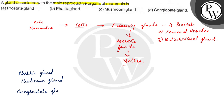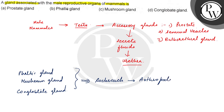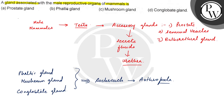These three types of glands are not seen in mammals; we get to see them in cockroach, which belongs to the phylum Arthropoda. So the correct answer to this question is the prostate gland — option A is the right answer.